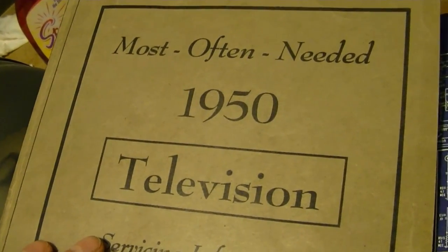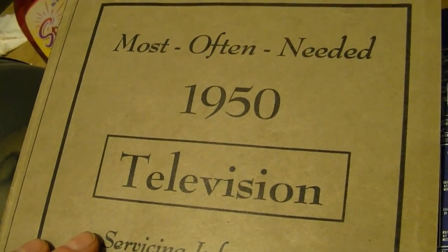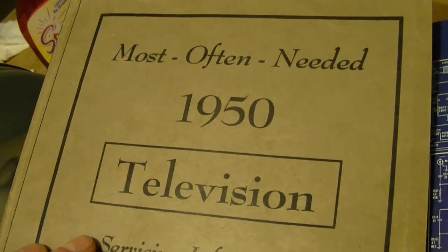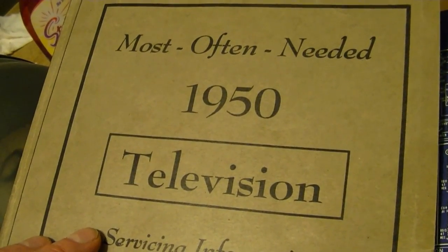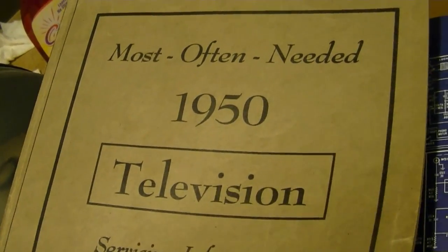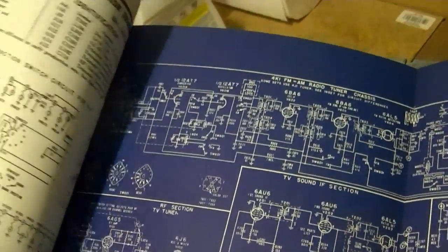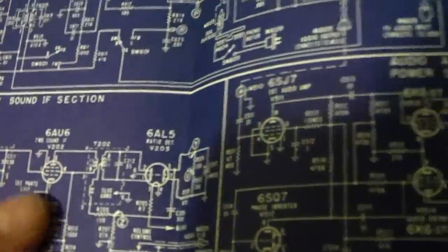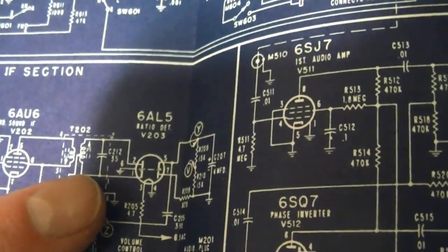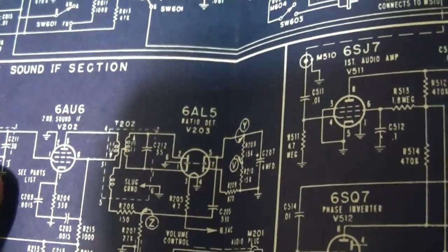It occurred to me on the bookcase right behind me, I've got a series of Beitmans Most Often Needed. So I started flipping through them and in the 1950 edition I found the Admiral 20A1. And guess what? They do show values. 35 picofarad for that guy and 30 for that.